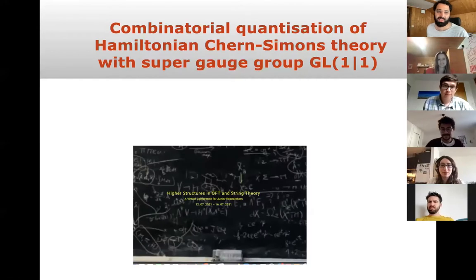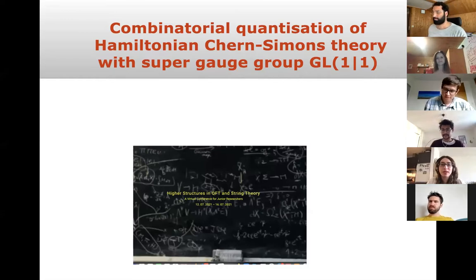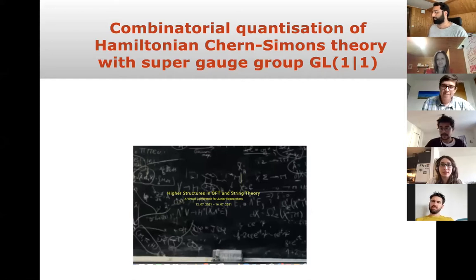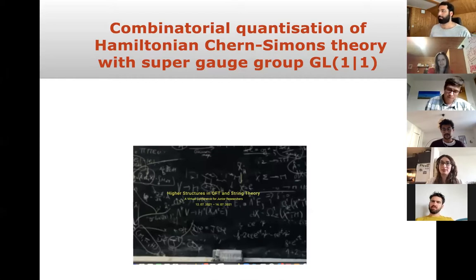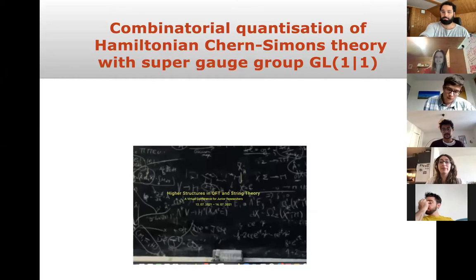It seems like a really amazing conference, and thanks to the organizers in advance. Today I'd like to talk about a combinatorial quantization of Hamiltonian Chern-Simons theory with the super gauge group GL(1|1). My point is to tell you what the title means.